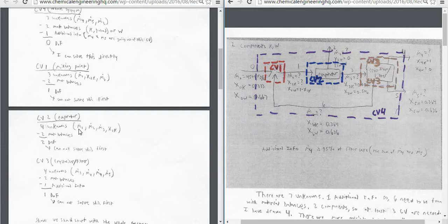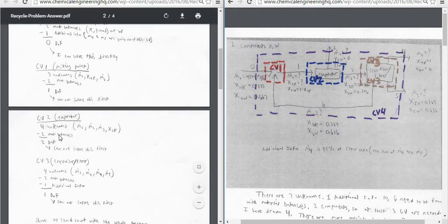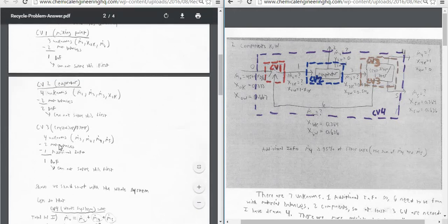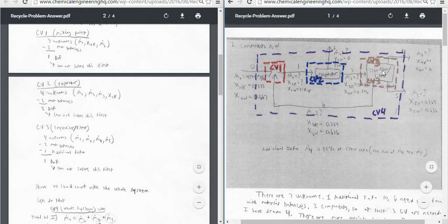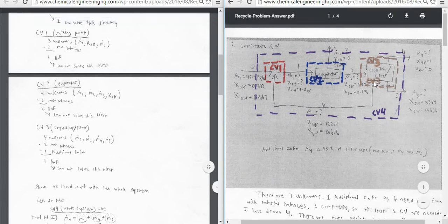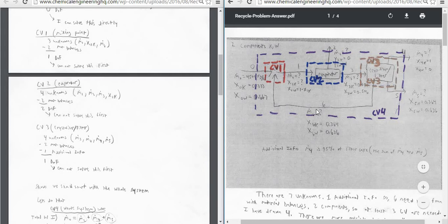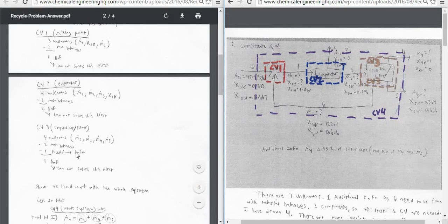But if we look at control volume two, the evaporator, we have four unknowns. You can see these four, which my mouse is going over. But we only have two material balances again, so we can't solve it. And then the crystallizer filter, which is the brown one, we have four unknowns again, which is M3, M4, M5, and M6 coming out of the bottom here. We have two material balances and that one additional information if we used it then, but we'd still have one degree of freedom.